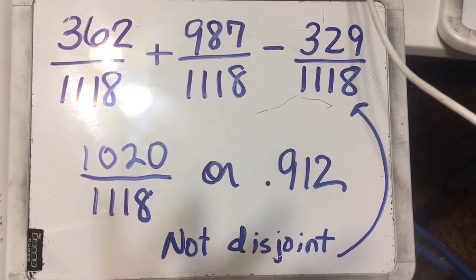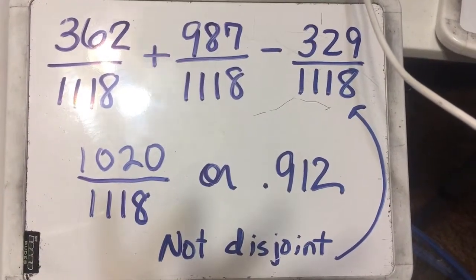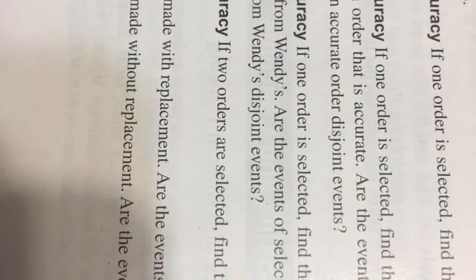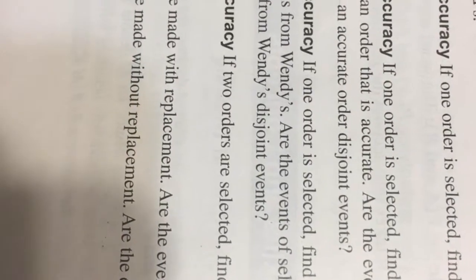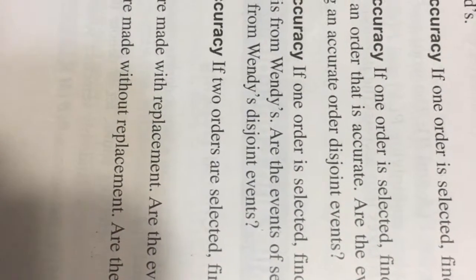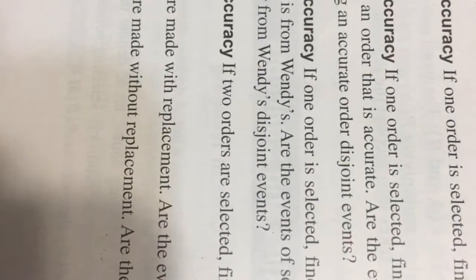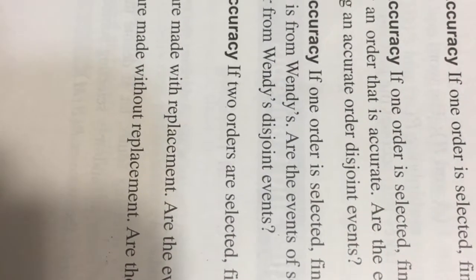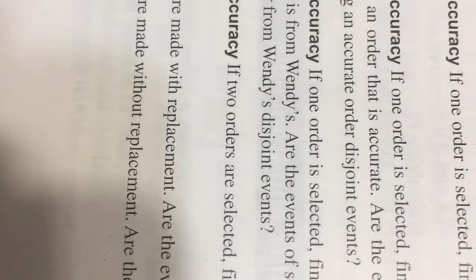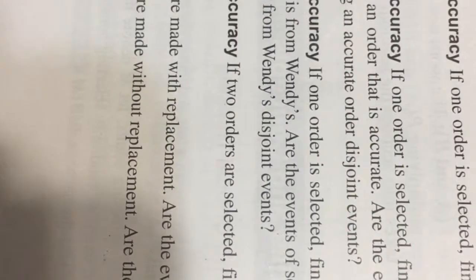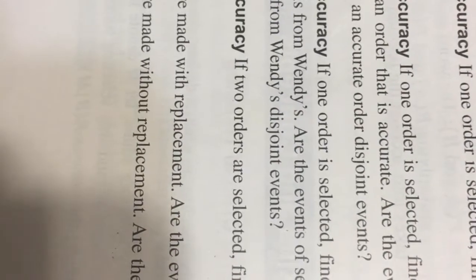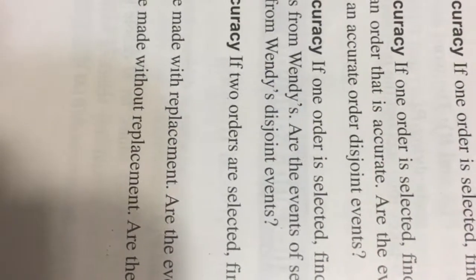That is the correct answer because I already checked it in the book for you. Number 12 is going to be very similar. It says: if one order is selected, find the probability of getting an order that is not accurate or is from Wendy's. Are the events of selecting an order that is not accurate and selecting an order from Wendy's disjoint events?